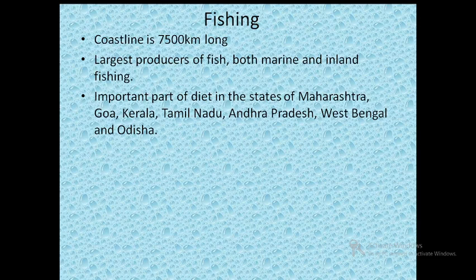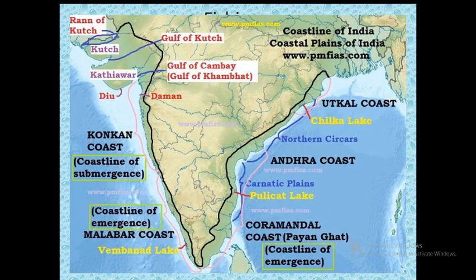Fish is an important diet for people in the states of Maharashtra, Goa, Kerala, Tamil Nadu, Andhra Pradesh, West Bengal and Odisha. Marine fishing accounts for nearly 40% of the total annual production of fish. This marine fishing is confined to the coastal waters from the Kutch coast in the west, along the Malabar coast, to the Coromandel coast in the east.